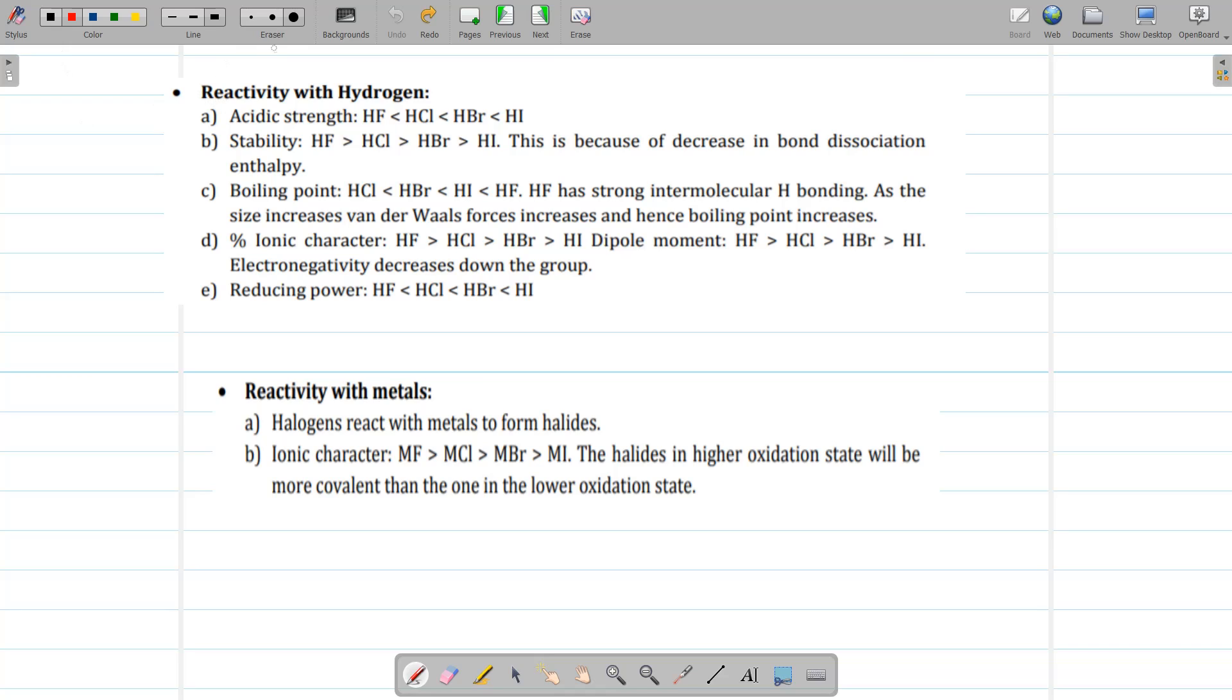Good morning student. Let's continue on Group 17. The next chemical property is the reactivity of halogen with hydrogen. Halogens react with hydrogen to form halogen acids and the acidic strength of halogen acid increases from HF to HI.